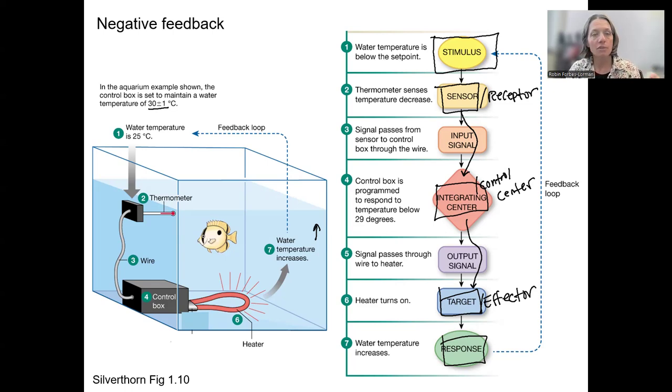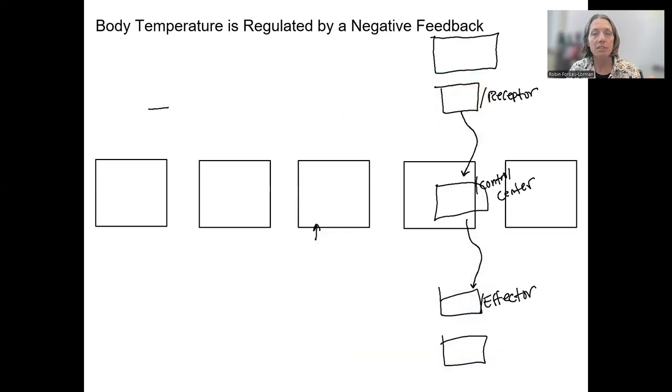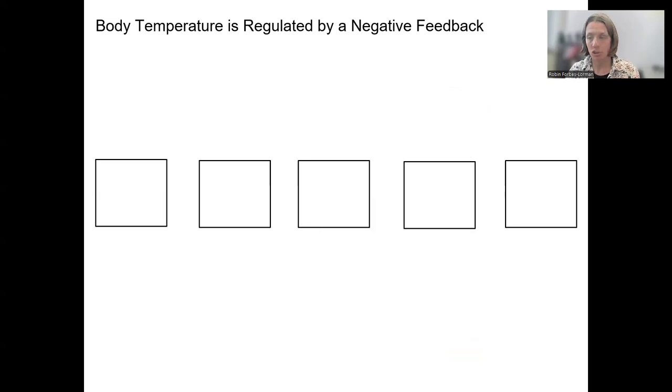I'm going to draw those same five again, but we're going to then put in specifics for body temperature instead of an aquarium temperature. What did I just say those were? Whenever you're doing this, the generic one I'm going to put up here: stimulus, sensor or receptor, control center, target slash effector, this is the one I tend to use both for, and then response. And then basically each of these is leading to the next.